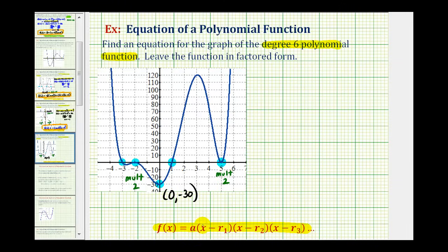We'll first find the factors based upon our roots or zeros, and then we'll find the value of a. So we'll have f(x) = a times... the first zero is x = -3, so the factor must be x + 3.